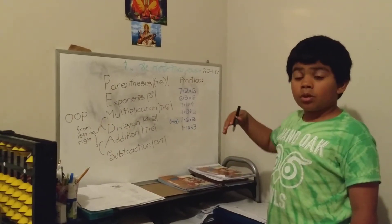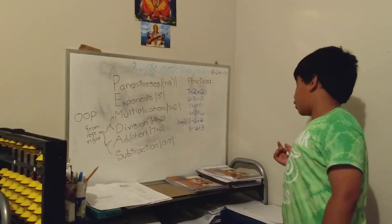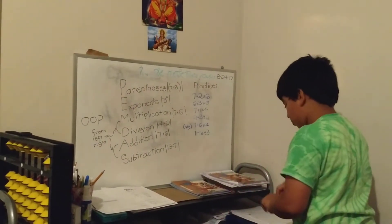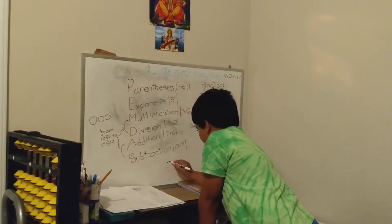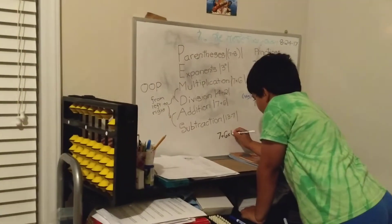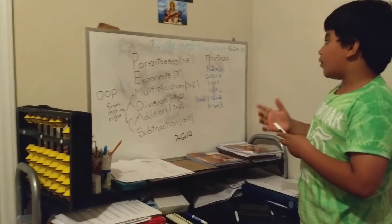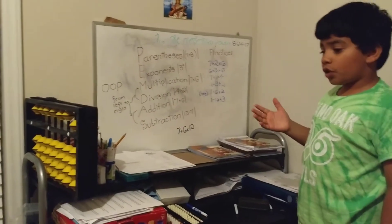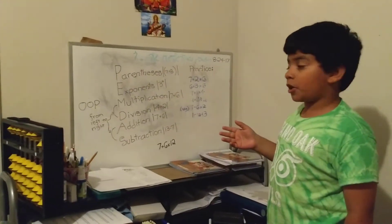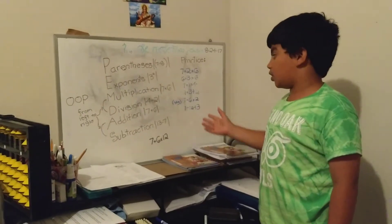In the next video we're going to do more complex six and seven number operations. To really do order of operations you should know: the first operation, addition; the second, subtraction; the third, multiplication; and the fourth, division. If you don't know these, you can't do order of operations.